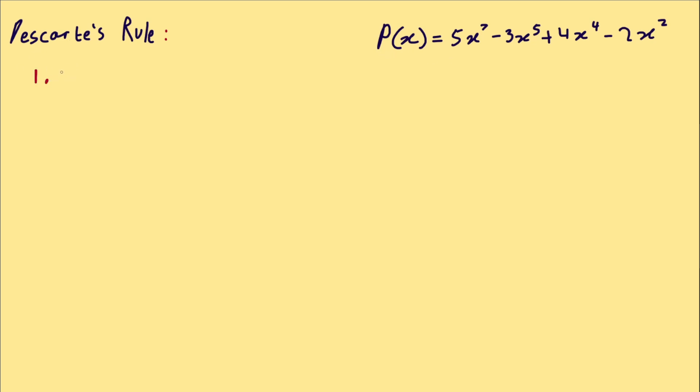First part: in polynomial P(x), the number of positive zeros is either equal to the number of sign variations, or this number subtracted by a random even number.